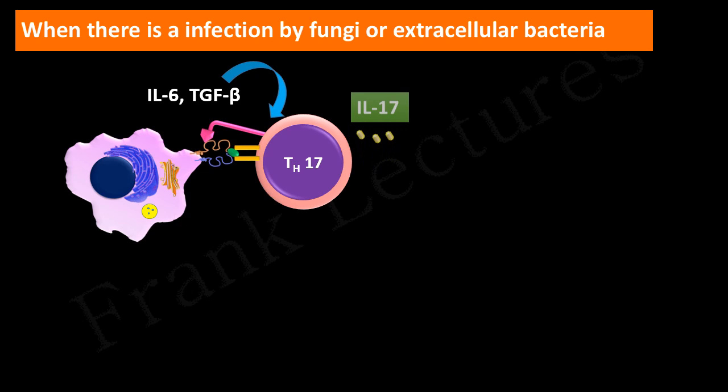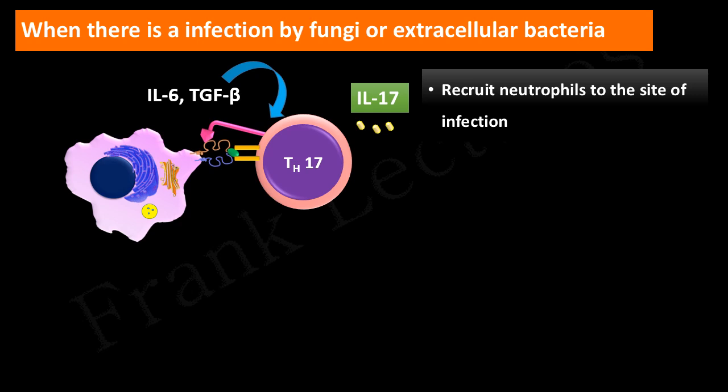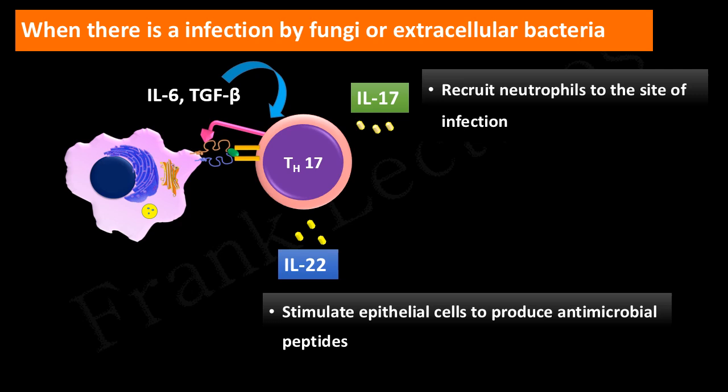Interleukin-17 secreted by these cells recruits leukocytes, specifically neutrophils, to the site of infection and induces inflammation. These neutrophils help defend against extracellular fungi and bacteria. It has been found that patients having a defective gene for interleukin-17 are more susceptible to bacterial and fungal infections. Interleukin-17 and interleukin-22 also help activate epithelial cells to produce antimicrobial peptides that resist microbial invasion. T helper 17 cells secrete interleukin-17 and interleukin-22, and their main function is to fight against fungal and extracellular bacterial infections.